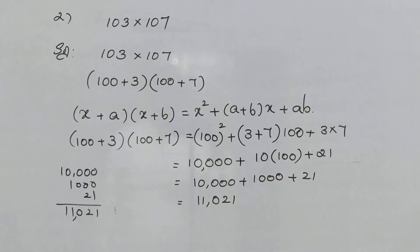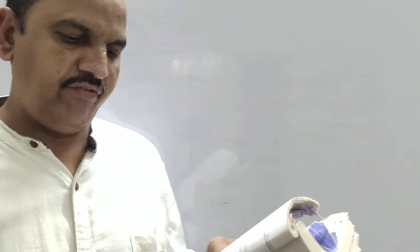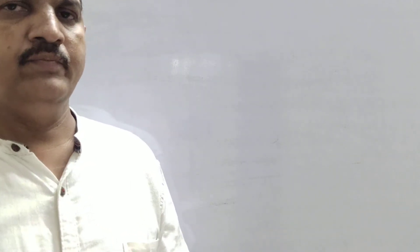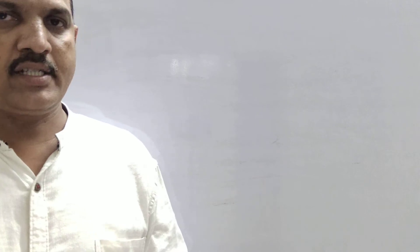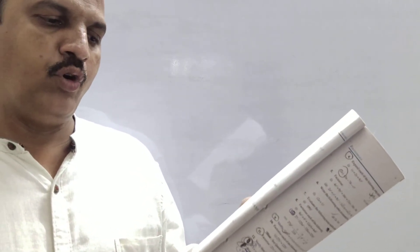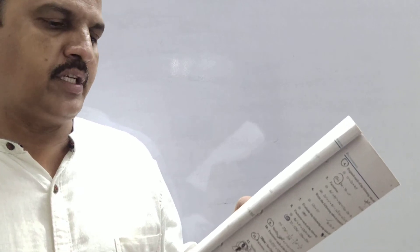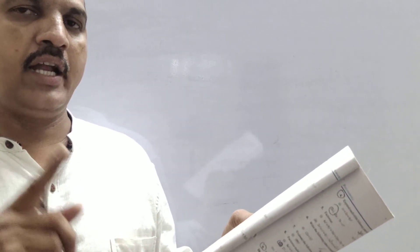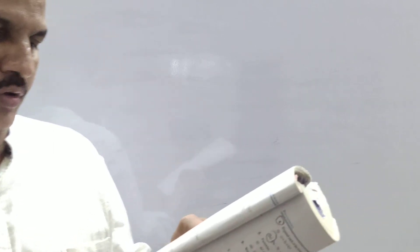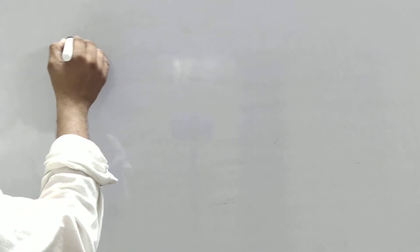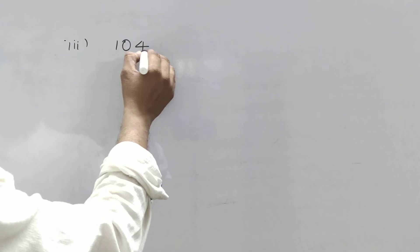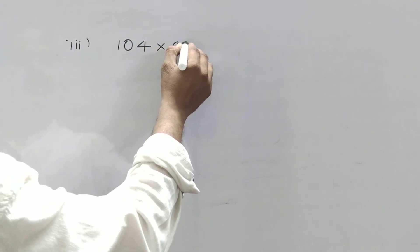See the next sum — I'll give the clue on how to do it. 95 into 96: you can write 100 minus 5 into 100 minus 4. The same formula you can use with minus symbols. Similarly, 104 into 96 means 100 plus 4 and 100 minus 4. This is a little bit a different formula.